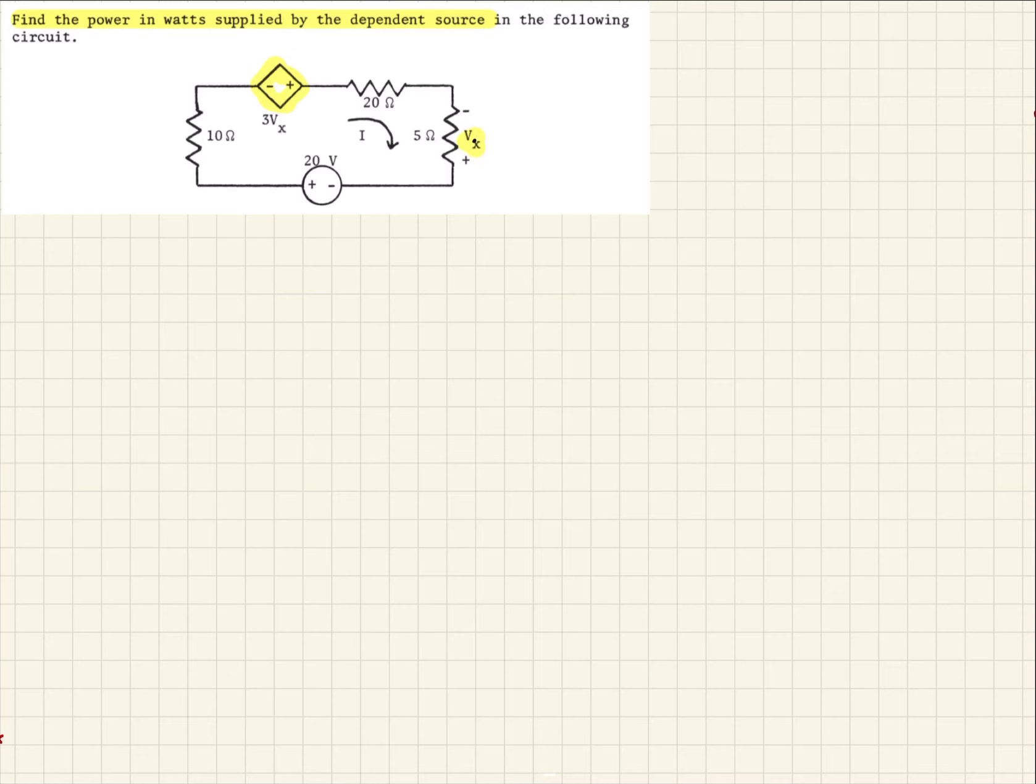So first thing we can see, let's just note down what we know. We know that the controlling voltage is Vx, and Vx, using Ohm's law, can be the resistance, which is 5 ohms, resistance times I, so it'll be 5. And then we have our I defined here, so that's times I.